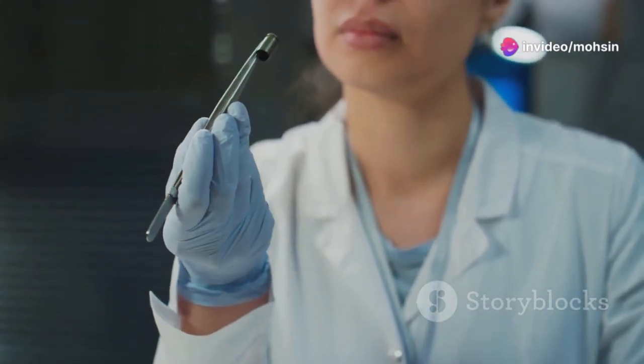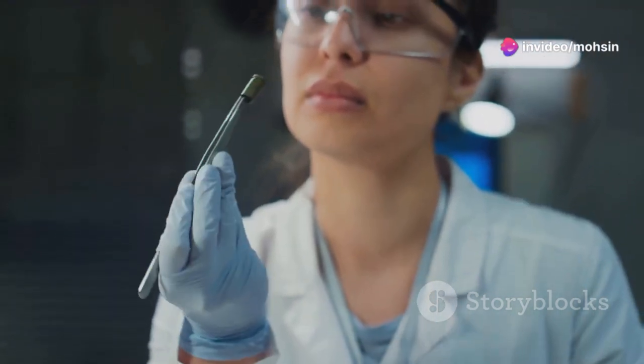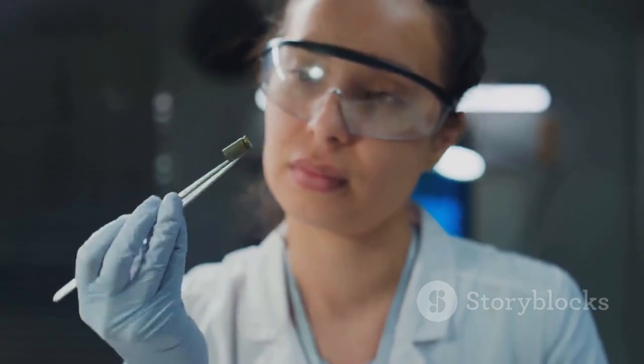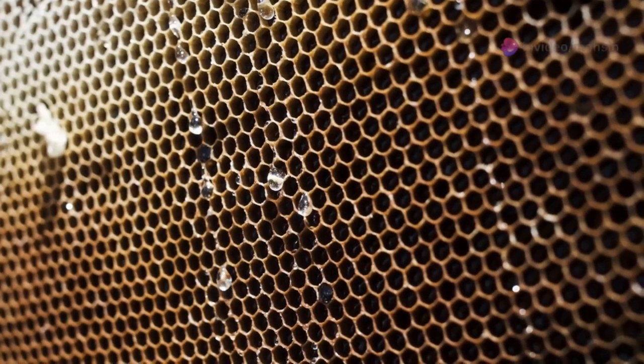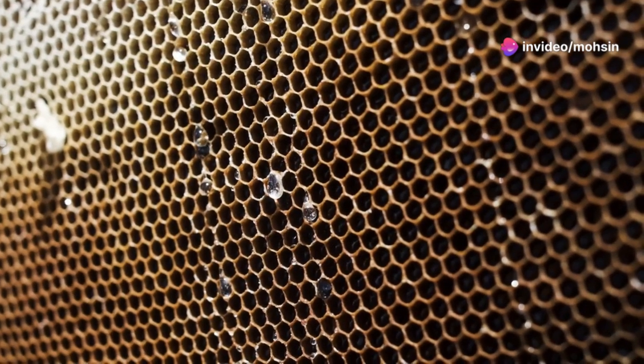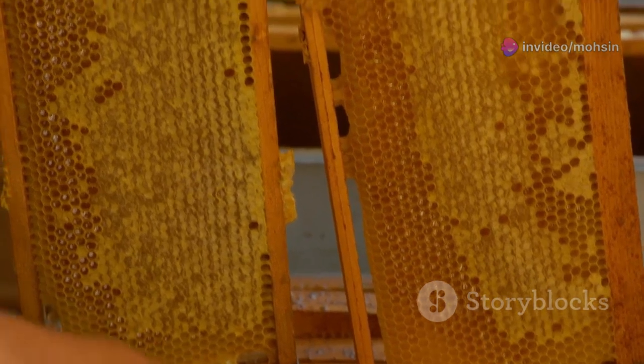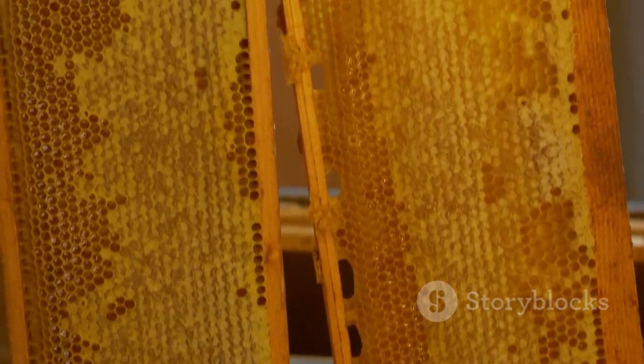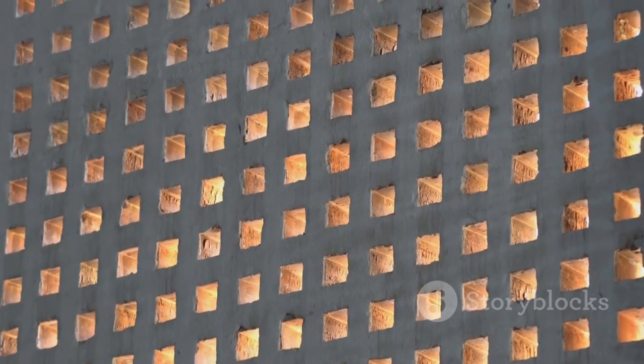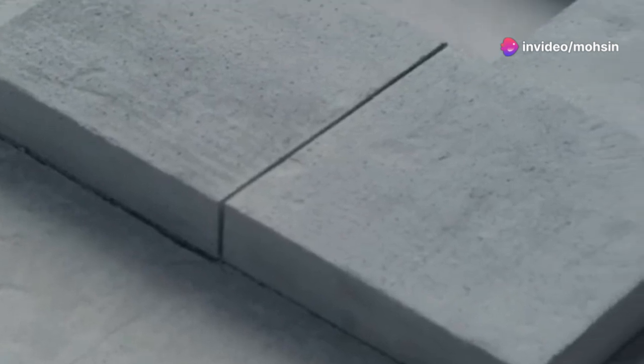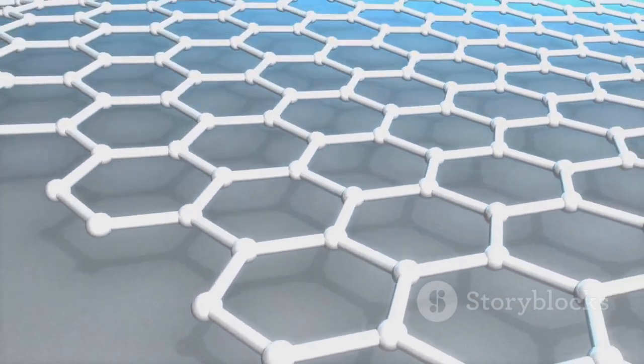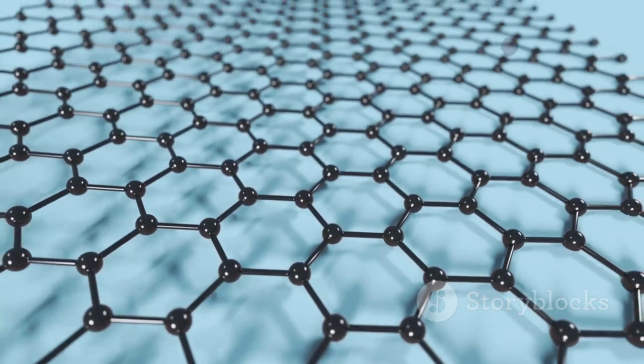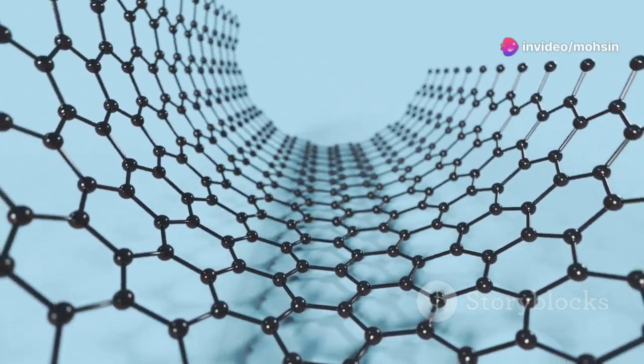To truly understand what makes MAC so special, let's start by comparing it to graphene, the superstar of the carbon world. Imagine graphene as a wall built from perfect, identical bricks, each one fitting seamlessly with the next. This flawless arrangement gives graphene incredible strength, but it also makes it a bit like glass—strong yet brittle and prone to shattering under the right kind of stress. Now picture MAC as a wall built from bricks of all shapes and sizes, jammed together in a completely random pattern. There's no neat order here, just a chaotic jumble that somehow holds together. This randomness isn't a flaw, it's a feature. It gives MAC a different kind of strength known as toughness, which is the ability to absorb energy and resist breaking even when pushed to the limit.